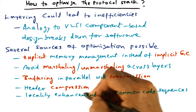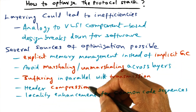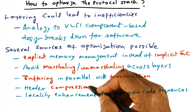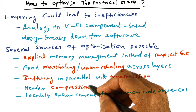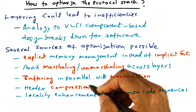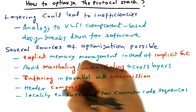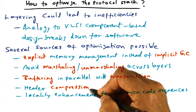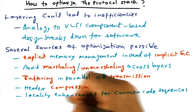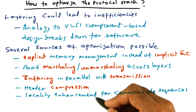Another opportunity is compressing the header, especially when we have layering. At every layer, it might add a new header specific to that layer, and that may have common fields — for instance, the size of the packet or the checksum. Those are common things that can be eliminated when going across these layers. Header compression is another possibility for optimization.